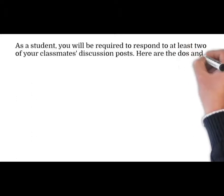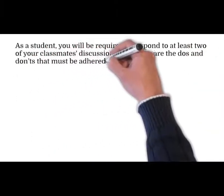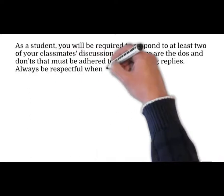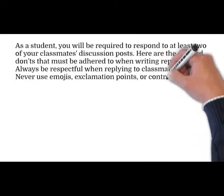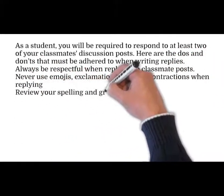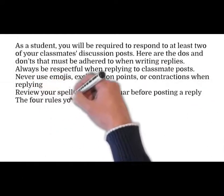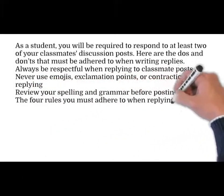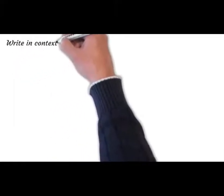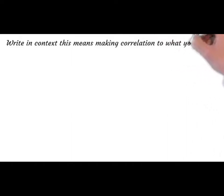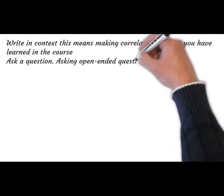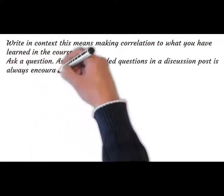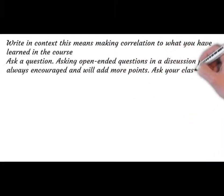Here are the dos and don'ts that must be adhered to when writing replies. Always be respectful when replying to classmate posts. Never use emojis, exclamation points, or contractions when replying. Review your spelling and grammar before posting a reply. The four rules you must adhere to when replying are: be respectful, make a meaningful reply, write in context — meaning make a correlation to what you have learned in the course — and ask a question. Asking open-ended questions in a discussion post is always encouraged and will add more points. Ask your classmate to elaborate on a point they made in their discussion.